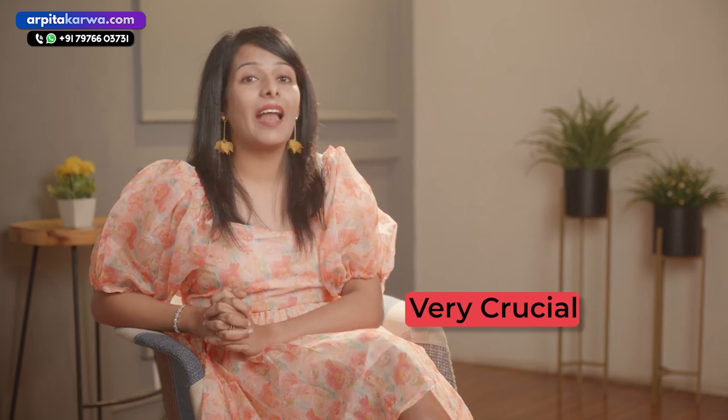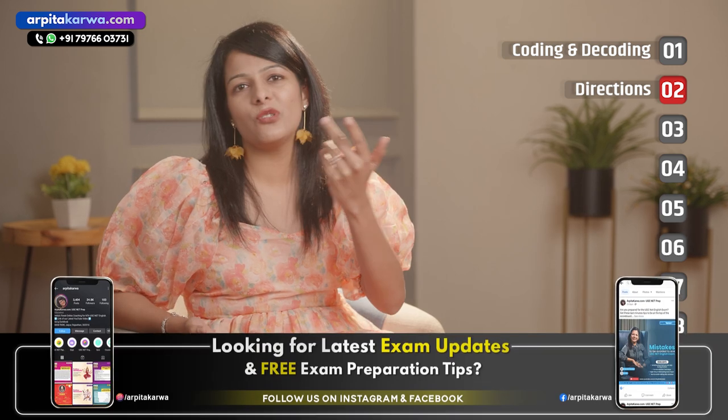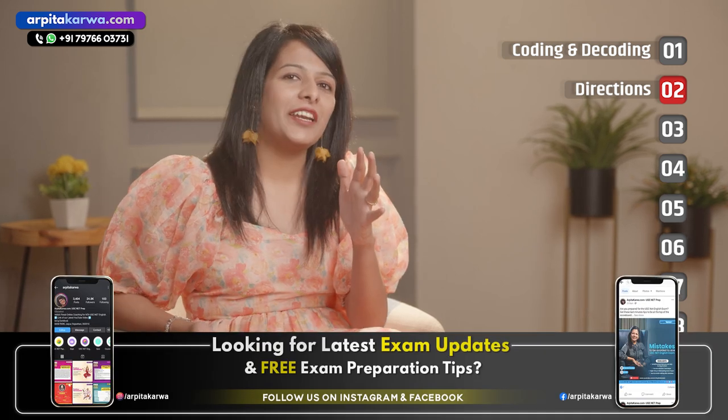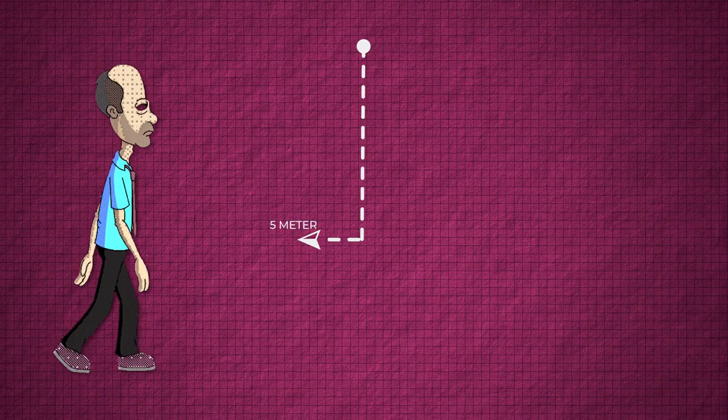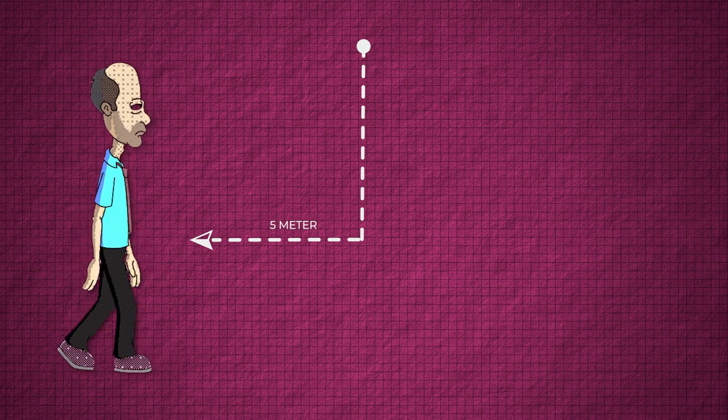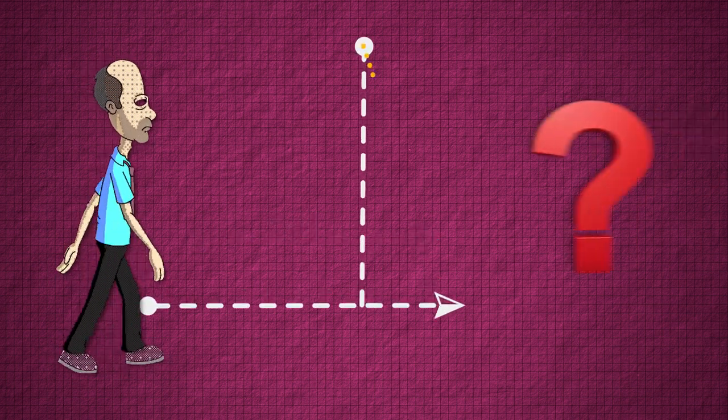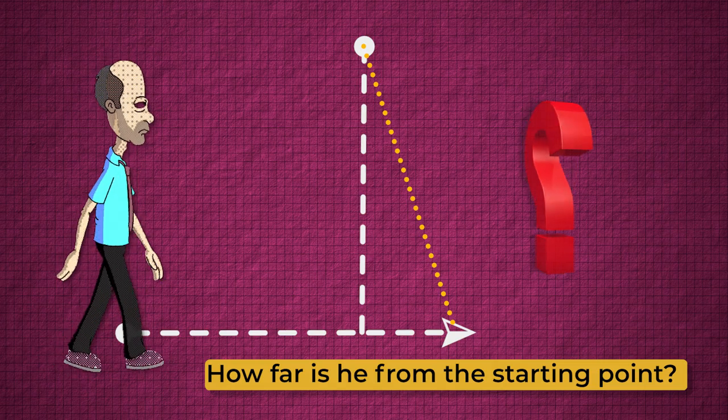The next category of question is very crucial from UGC NET Paper 1 point of view, and that is directions. You will find such questions coming in the exam every time, every year. One fine example: a man walks 10 meters in front, then walks 5 meters towards left, then walks 6 meters towards right. How far is he from his starting point? In such questions, you will have to make a diagram, which will make it much easier for you to solve them.